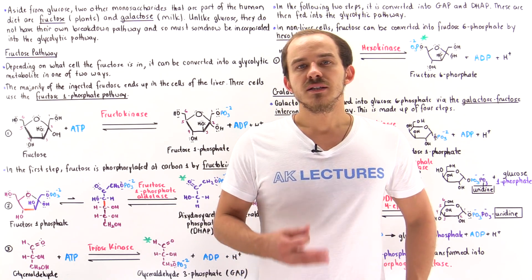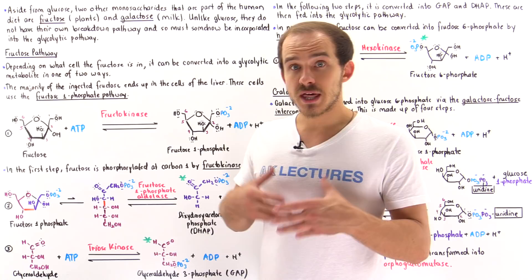The three major types of monosaccharides that we ingest into our body as part of the human diet are glucose, fructose, and galactose.